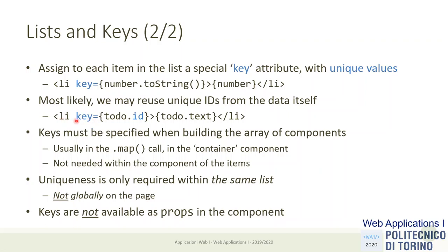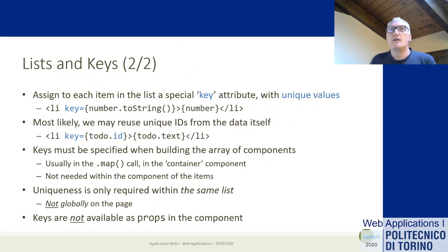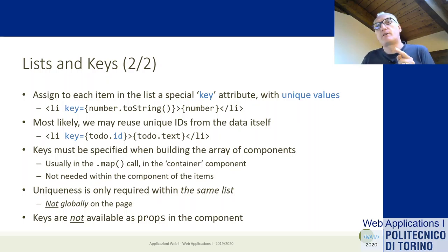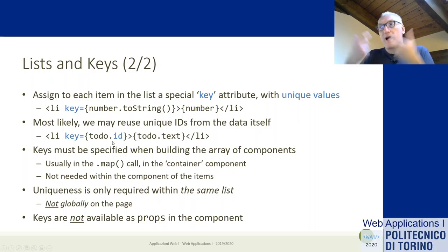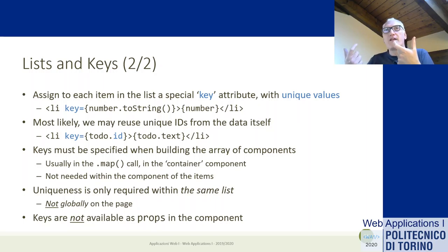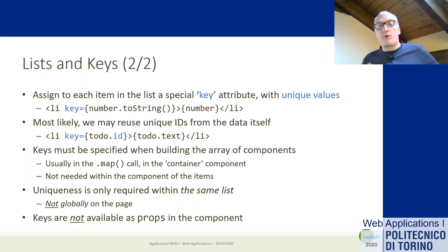One detail: the key is a property consumed by React but not available as props. If you try to access props.key inside the component, it won't be there. Key is an attribute used to manage the list but is not available inside the component. If inside the component you really need the id, you should pass it twice — once as key and once as another attribute like id — so it will be available as props.id.